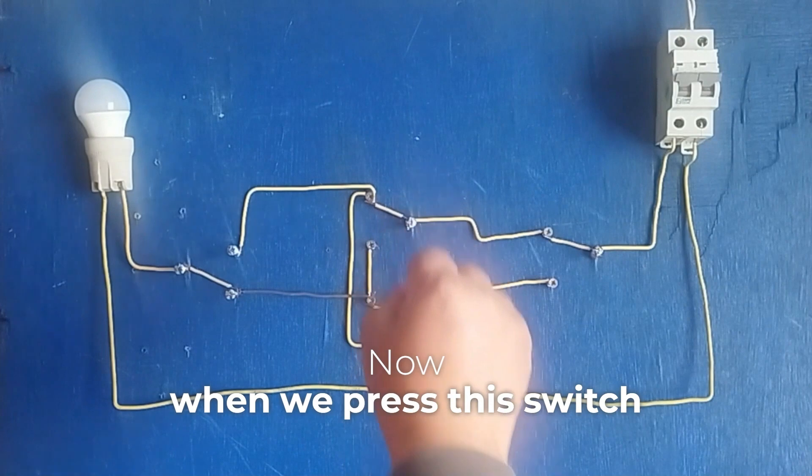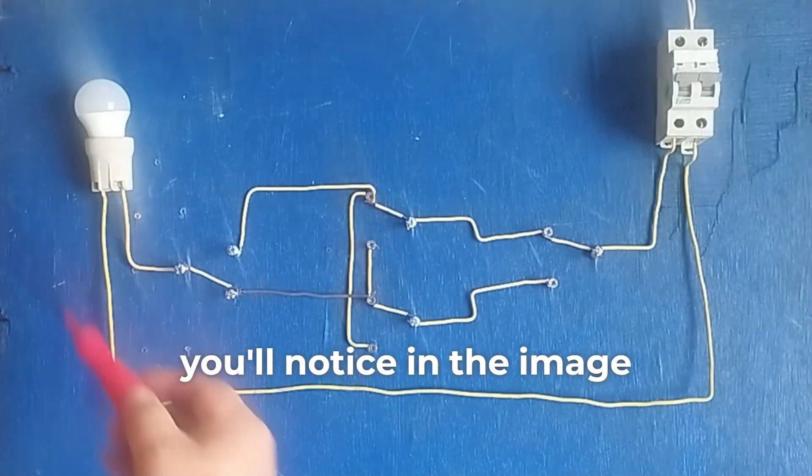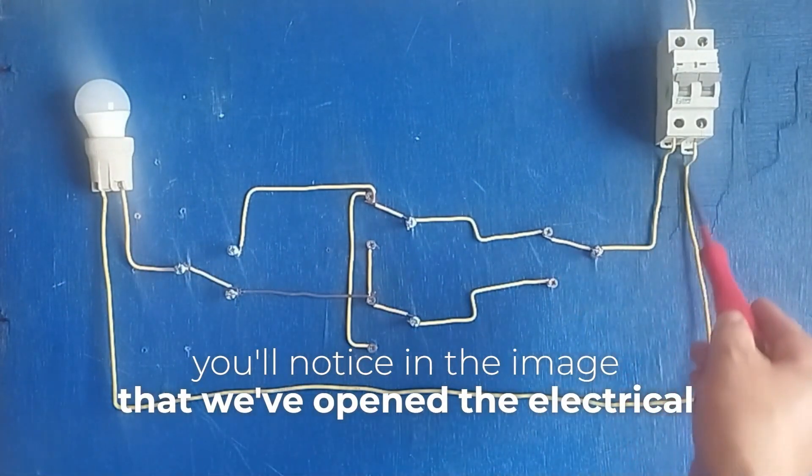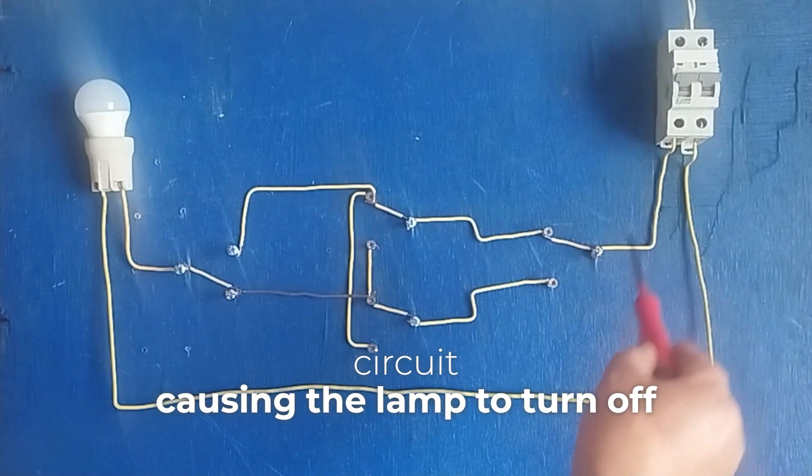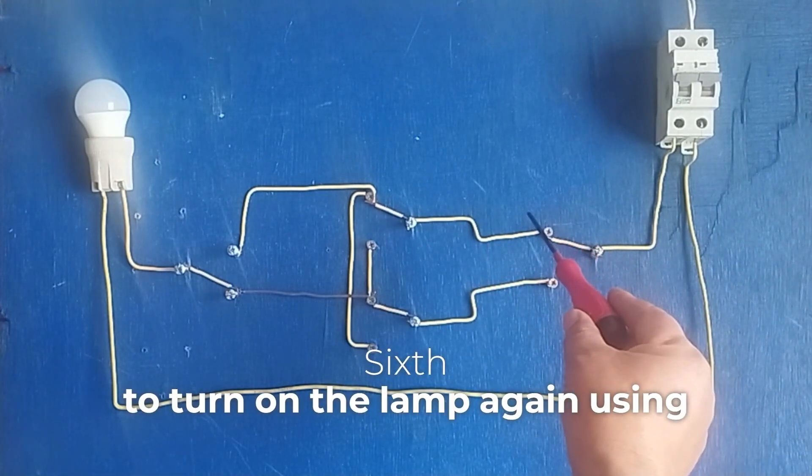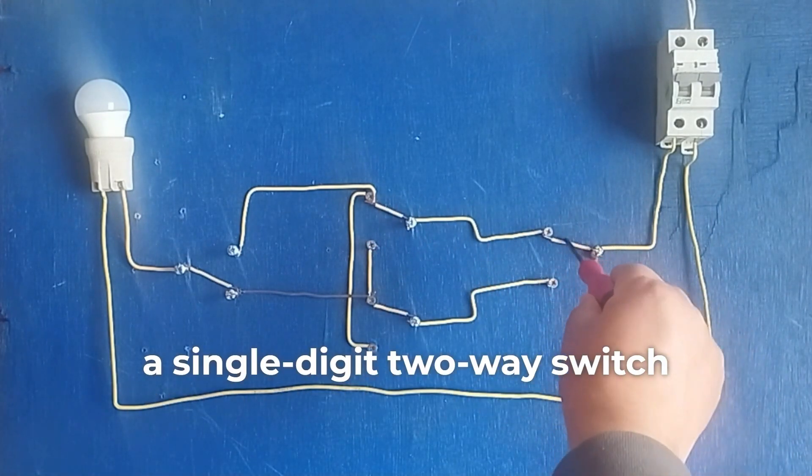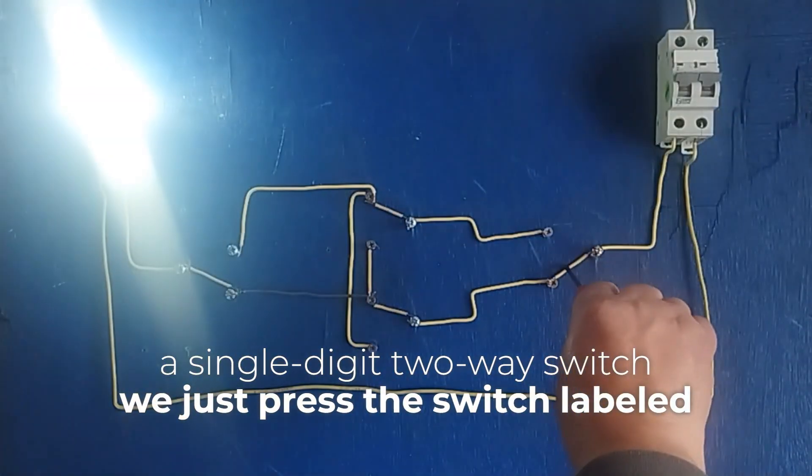Now when we press this switch, you'll notice in the image that we've opened the electrical circuit, causing the lamp to turn off. Sixth, to turn on the lamp again using a single digit two-way switch, we just press the switch labeled number one.